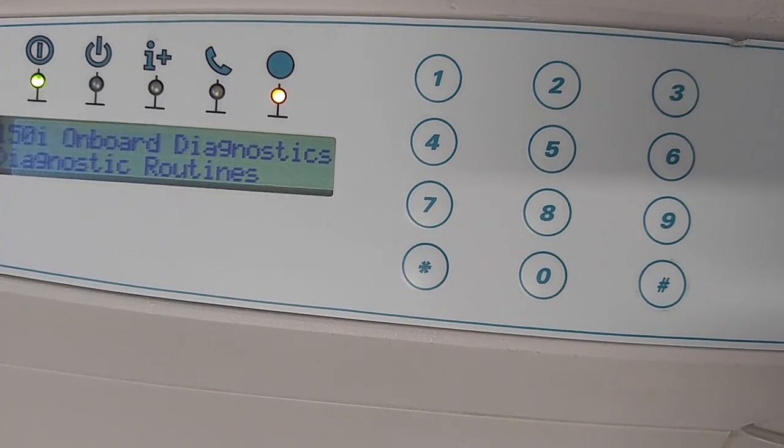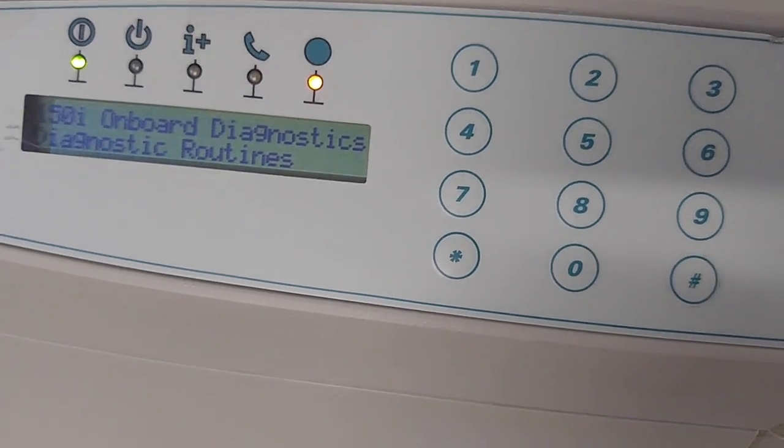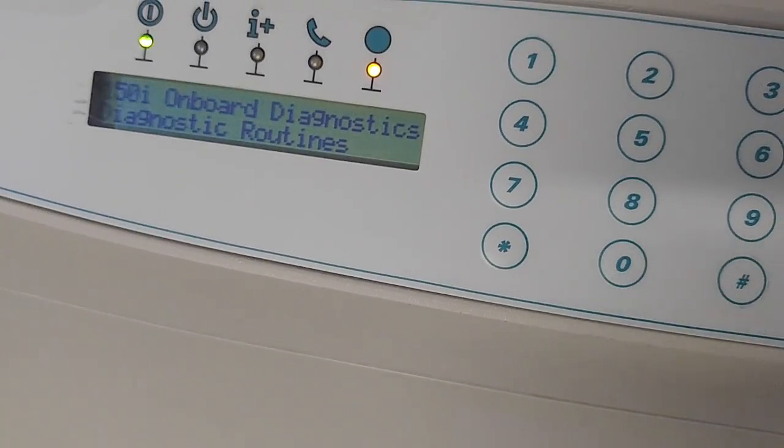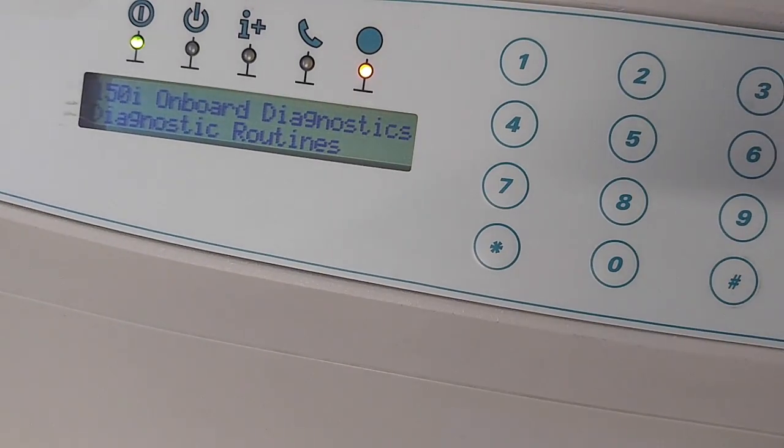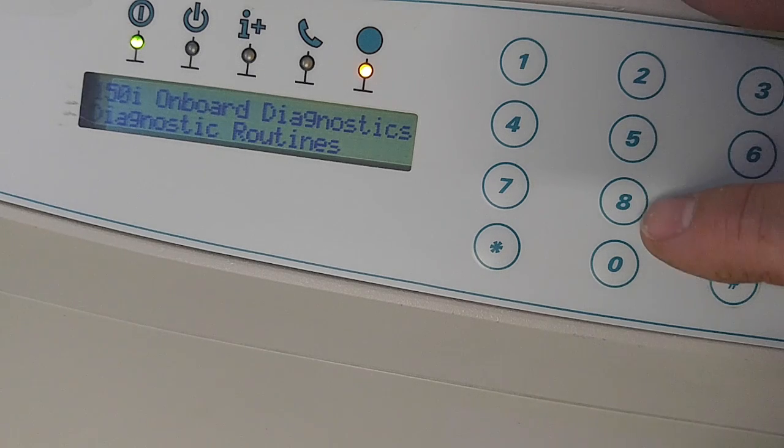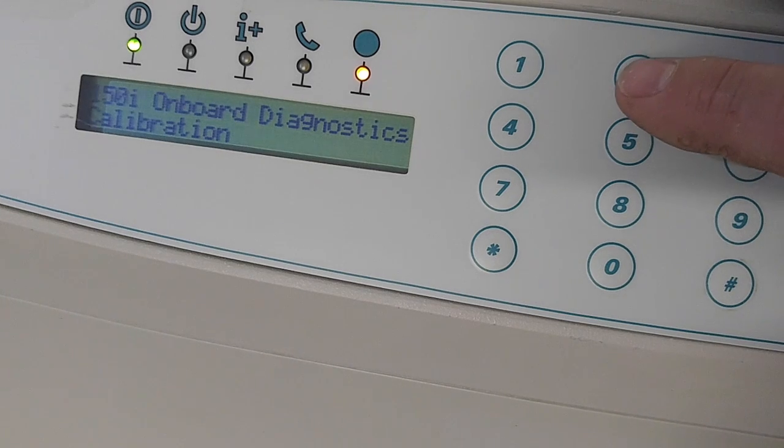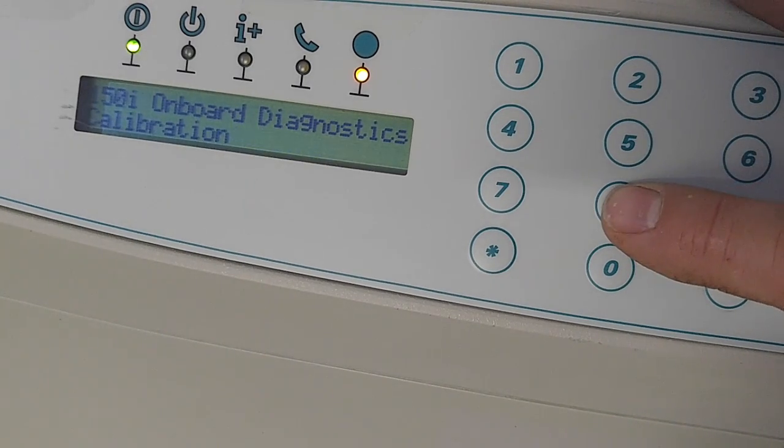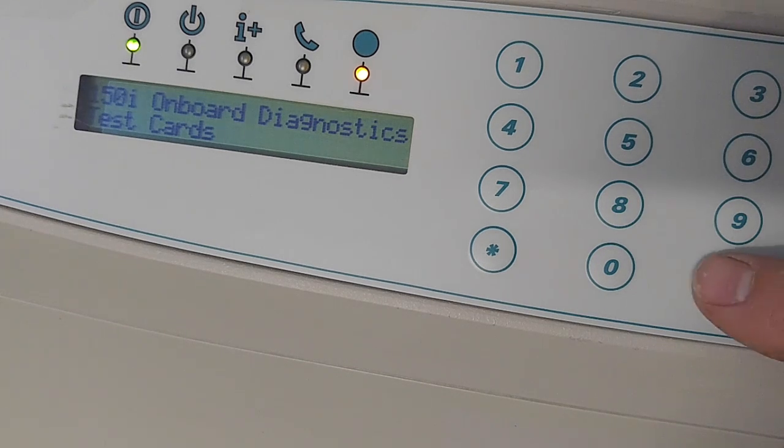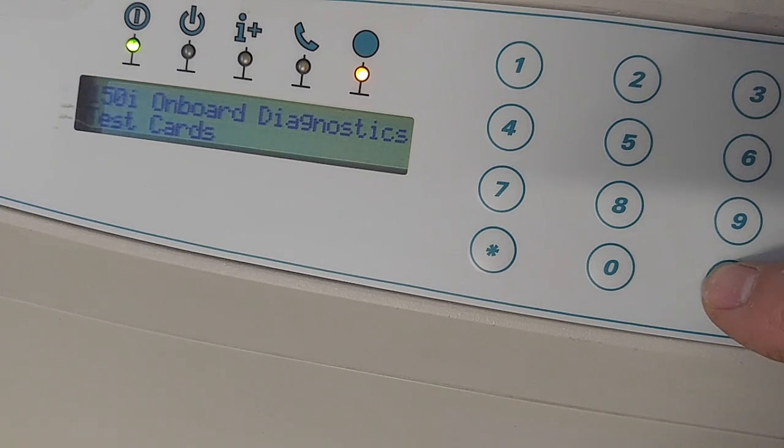So here we've got the main menu, and the 8 and 2 will take you up and down in the menu. So we're going to go down to Test Cards, and then pound will select that menu option.